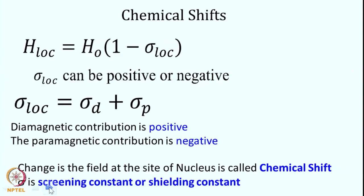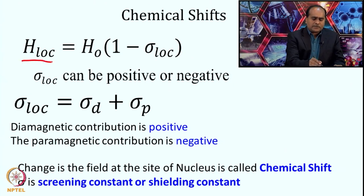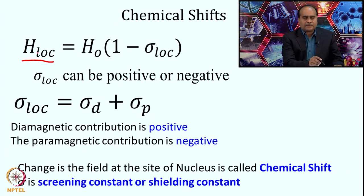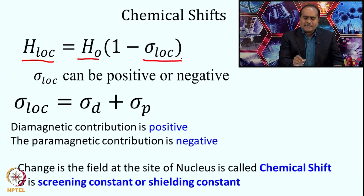We then discussed how the differential electronic cloud around a particular nucleus gives rise to different effective absorption frequency or magnetic field. H_local — the magnetic field experienced by a particular nucleus — is different from H0, the main magnetic field. This depends on the screening or shielding constant sigma_local around that nucleus.